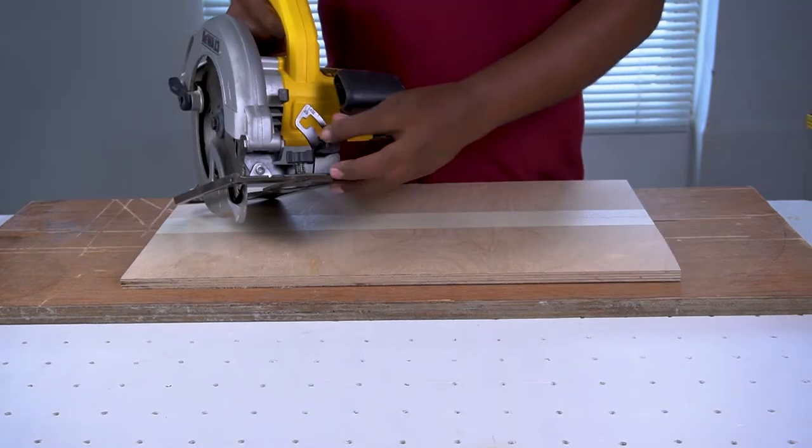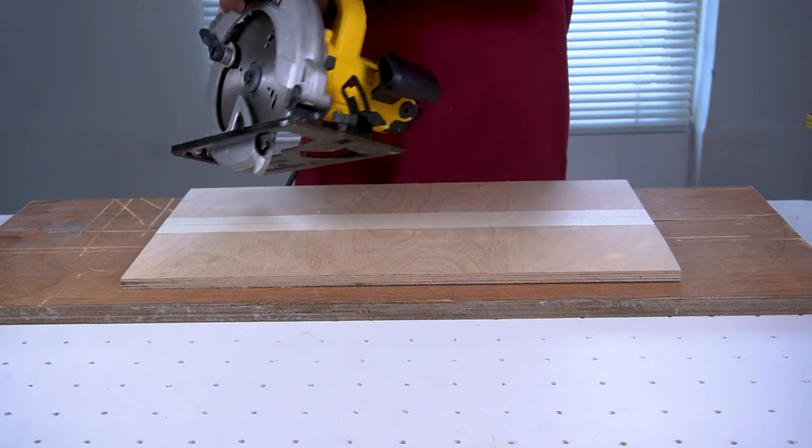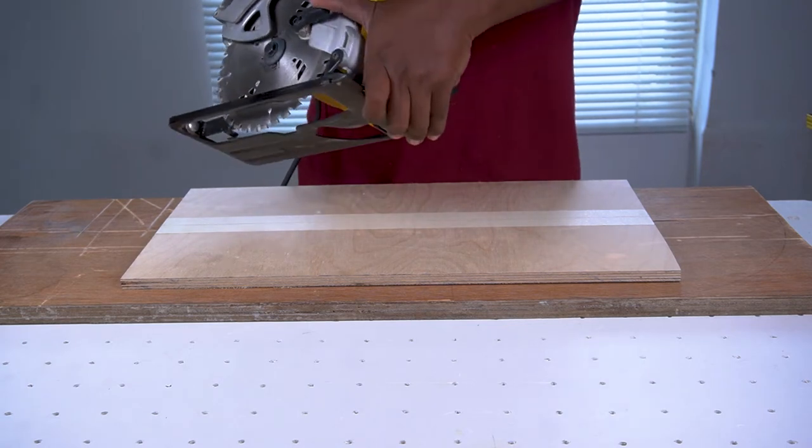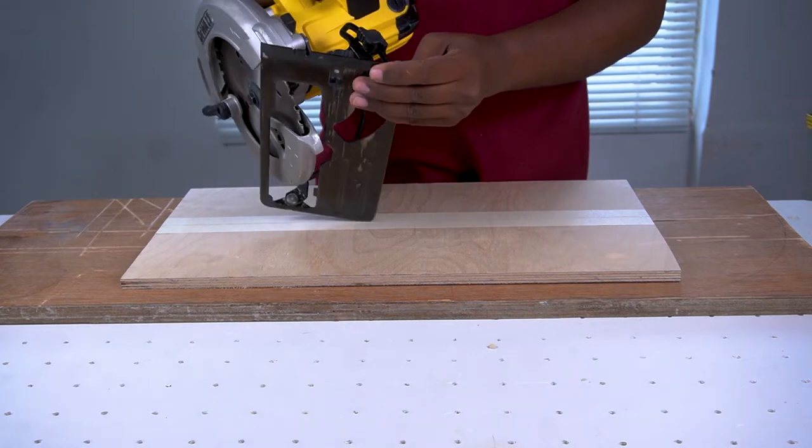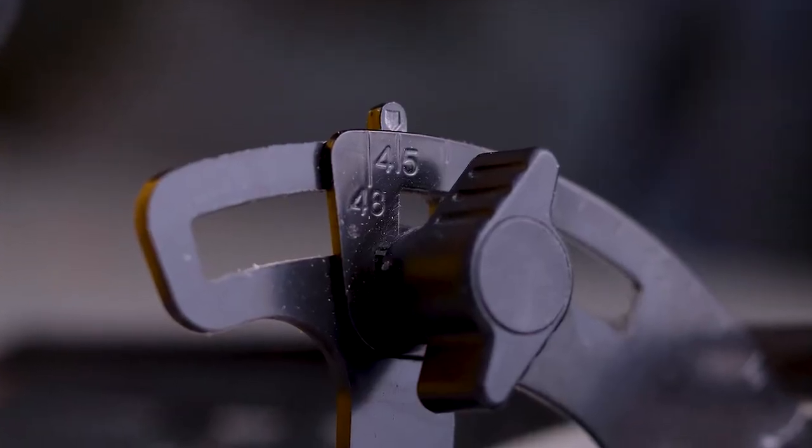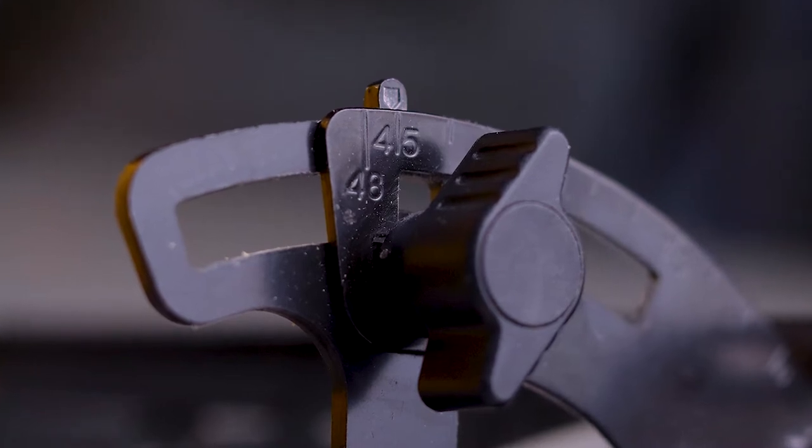Begin by selecting the angle for the French cleat. Any double cut with an angle between 30 degrees to 45 degrees is fine for making the French cleat. In this example we'll be cutting a 45 degree angle with the circular saw.